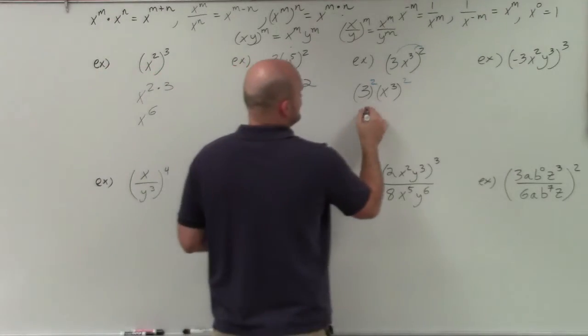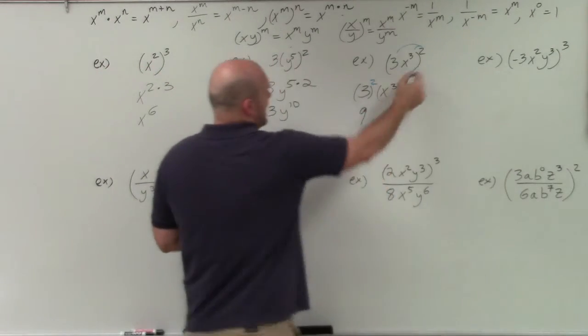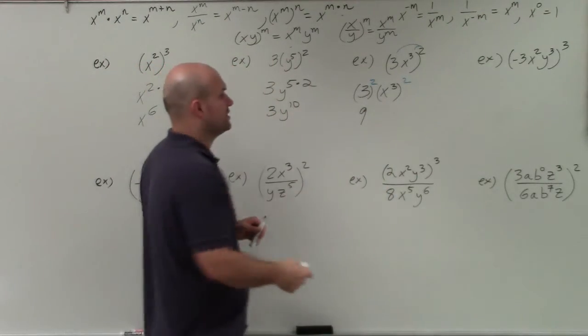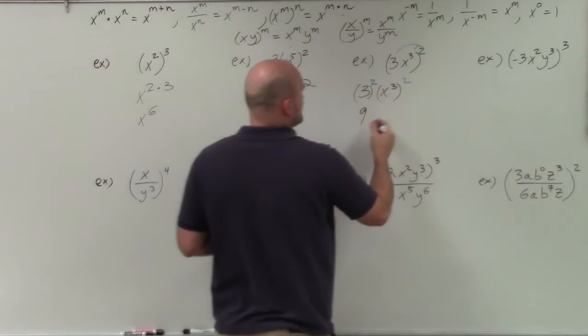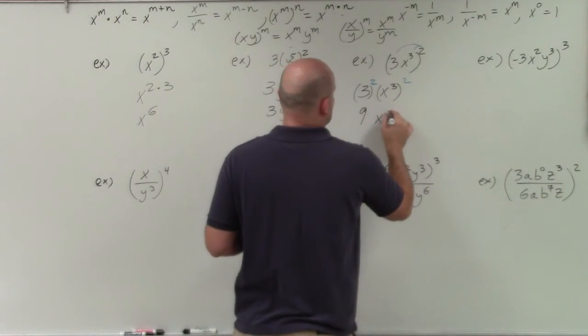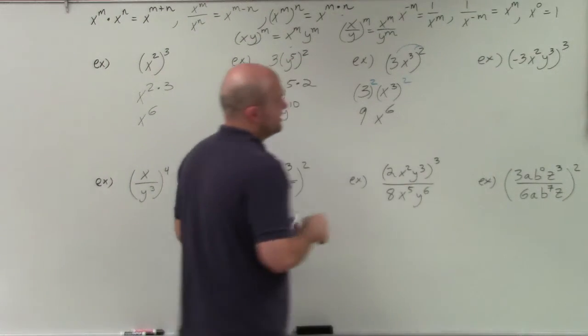3 squared is just equal to 9. And then here I can just apply the power rule again — 3 times 2 is going to equal 6, so that's x to the sixth.